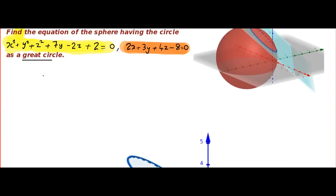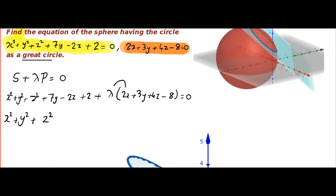Now, let us start. What we do is, we write the required family of spheres will be S plus lambda P equal to 0. And that gives me x square plus y square plus z square plus 7y minus 2z plus 2 plus lambda times 2x plus 3y plus 4z minus 8 equal to 0. Now, let us rearrange and make it look like a sphere. We get x square plus y square plus z square. And I will distribute this lambda. So, I get 2 lambda times x plus 7 plus 3 lambda times y plus minus 2 plus 4 lambda times z plus 2 minus 8 lambda equal to 0. This is a family of spheres that will pass through this blue colored circle. That is the circle formed by the intersection.